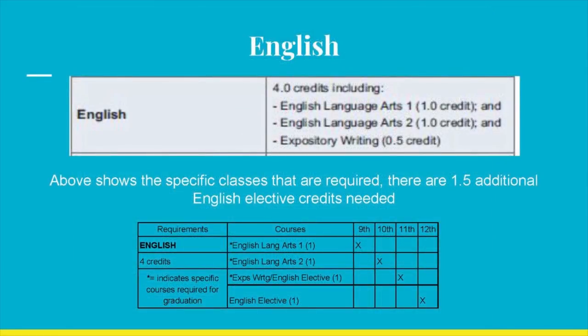Referring to the table on the left, English is the first category. A student must first earn four total credits, which must specifically include English Language Arts 1, English Language Arts 2, and half a credit in an expository writing course. This expository writing requirement can be fulfilled with a credit in English 3 or 4, AP English, or Early College English 100. The remaining 1.5 credits will be earned throughout your 11th and 12th grade English classes, for a total of 4. If you fail a course, you will need to retake that course, which means doubling up in the next or subsequent years.